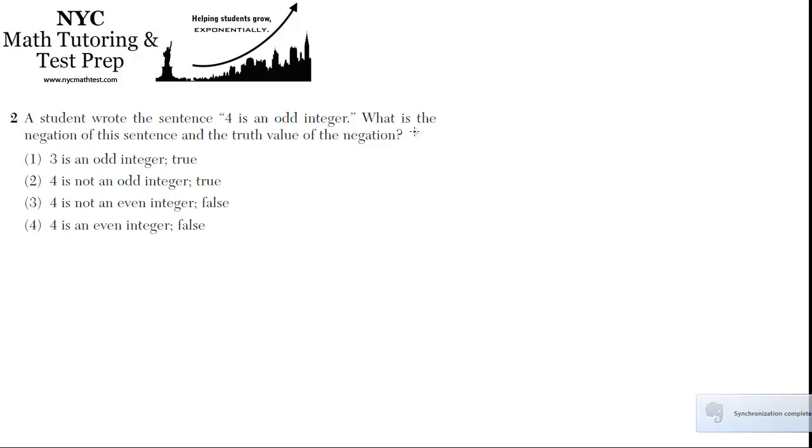So the student's sentence is 4 is an odd integer, and we want to know the truth value of the negation. So the original statement, by the way, what is the truth value of the original statement, 4 is an odd integer? Is that true? No, 4 is an even integer, so that's a false statement.